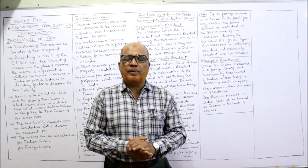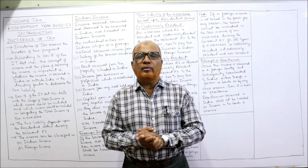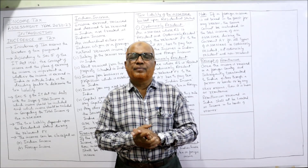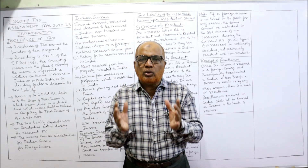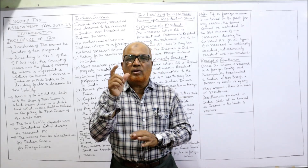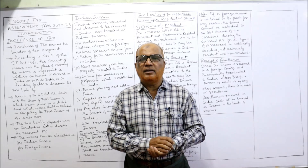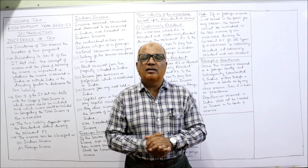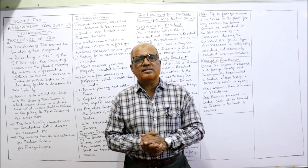In the last two videos I explained about the residential status of a person. Now in this video I am going to explain about incidence of tax — that means the scope of income — which income is to be included and which is to be excluded in computing the total income of a person. Remember, every income is not taxable. These provisions are given under Section 5 of the Income Tax Act 1961.